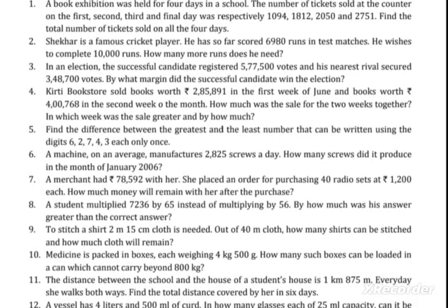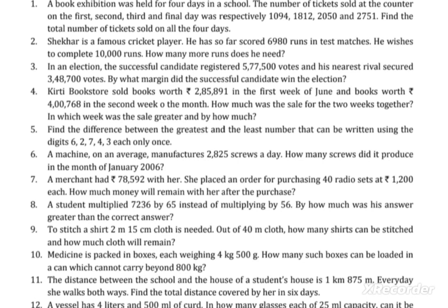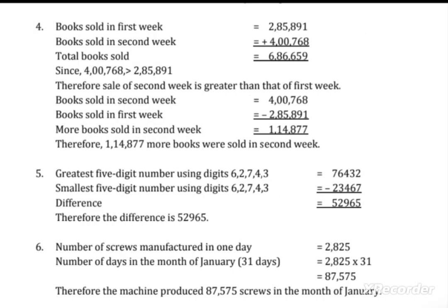The fifth question: find the difference between the greatest and the least number that can be written using the digits 6, 2, 7, 4, 3 — each used only once. The greatest 5-digit number using these digits is 76432 and the smallest is 23467. Arrange digits descending for the greatest, ascending for the smallest, then subtract to get 52965.